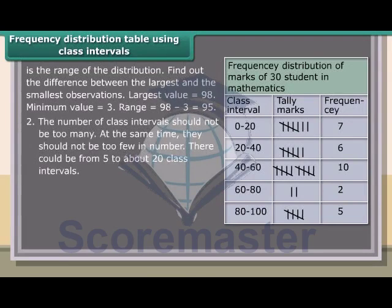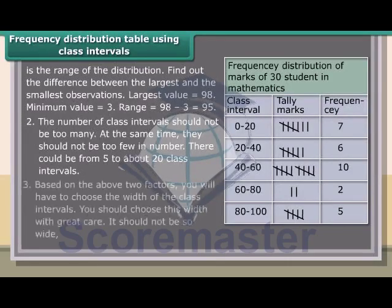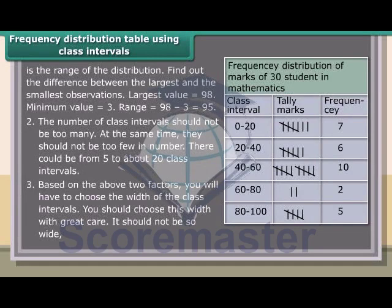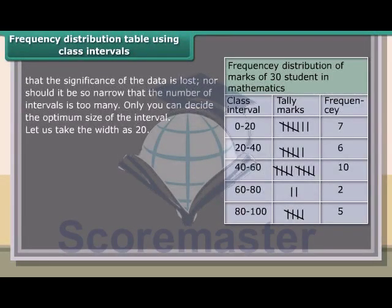The number of class intervals should not be too many, and at the same time they should not be too few. There could be from 5 to about 20 class intervals. Based on these two factors, you will have to choose the width of the class intervals with great care. It should not be so wide that the significance of the data is lost, nor so narrow that the number of intervals is too many. Only you can decide the optimum size of the interval.